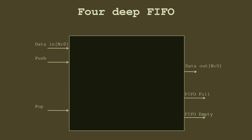By '4-deep' we mean we can store at most four values. If there are four pushes with no pop, we can't push anymore, and we assert a 'FIFO full' signal. If the FIFO is empty - at the start or after all values have been popped - pop should not be asserted since no data is available. We assert a 'FIFO empty' signal in that case.